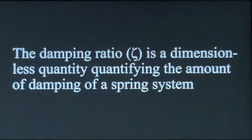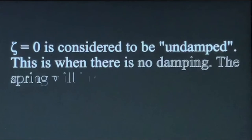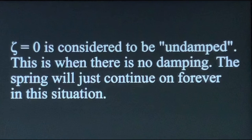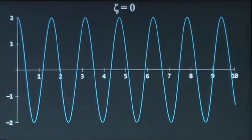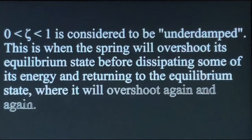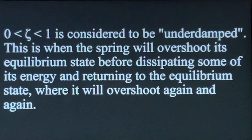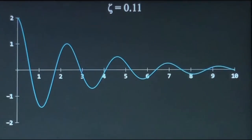When zeta equals zero, it is considered undamped — there is no damping, and the spring will continue on forever. This case is impossible in real life, because there is always some friction. Its graph looks just like a sinusoidal wave. When zeta is between zero and one, it is considered underdamped. In this case, the spring will overshoot its equilibrium state before dissipating some of its energy and returning, then overshooting again and again. This is the most common case in real life, and its graph looks like a decaying sinusoidal wave.